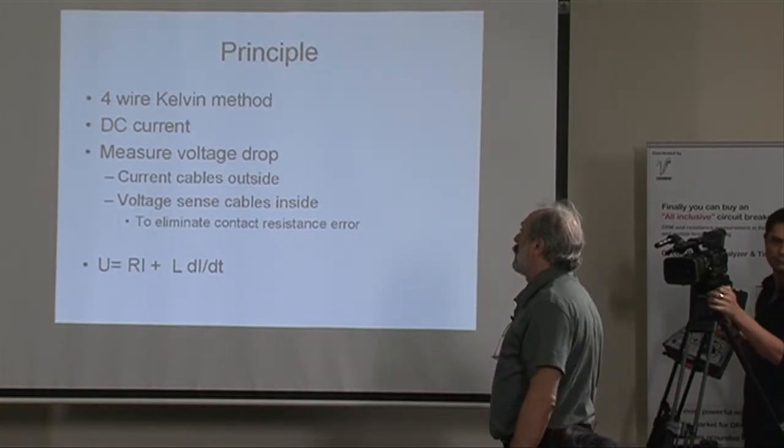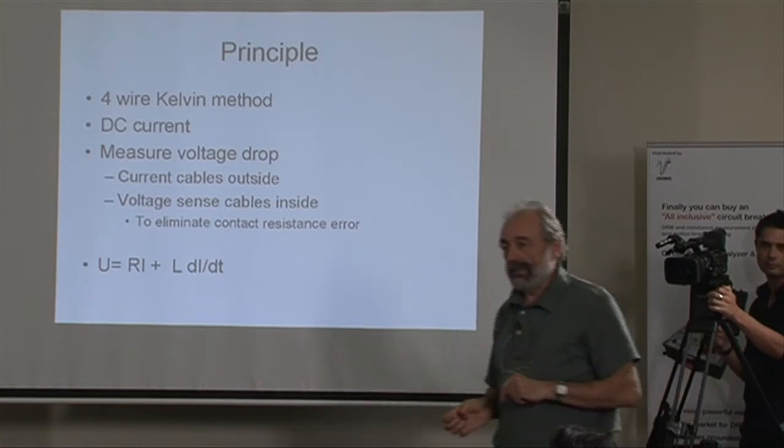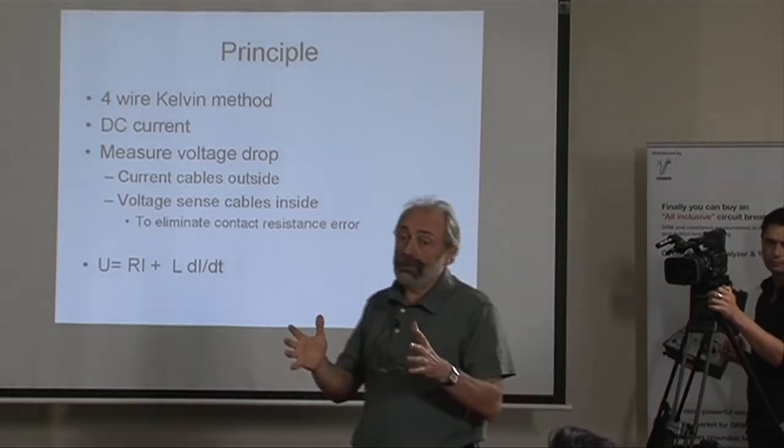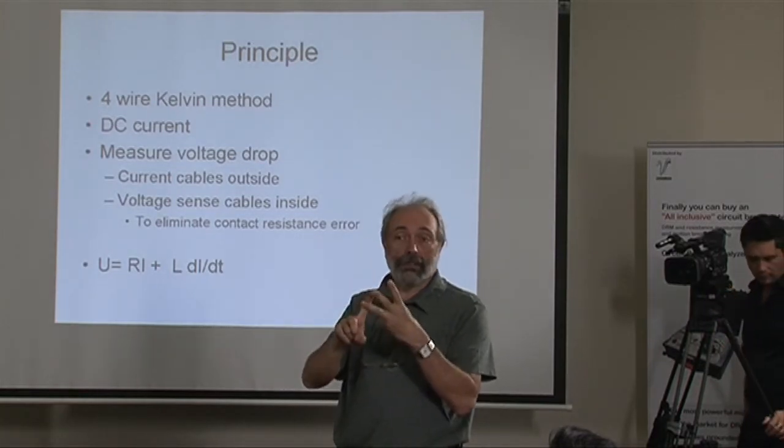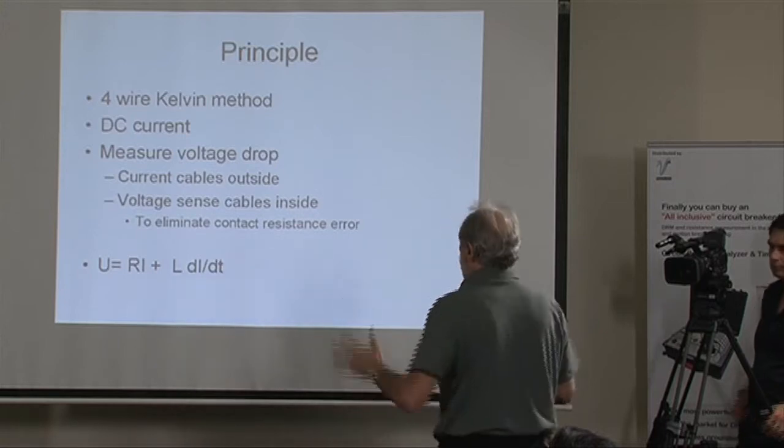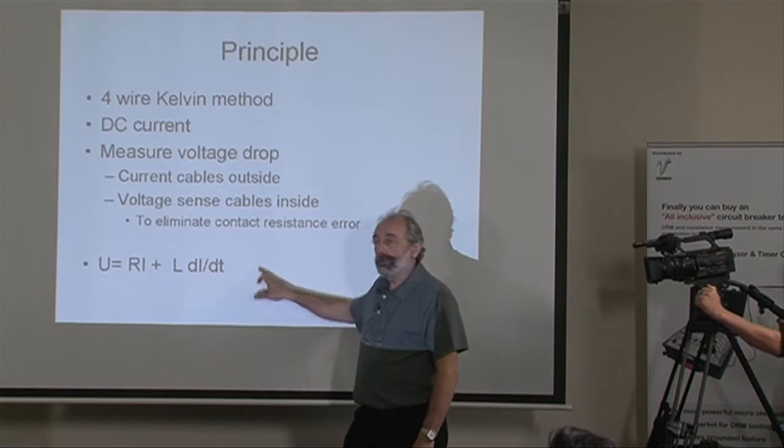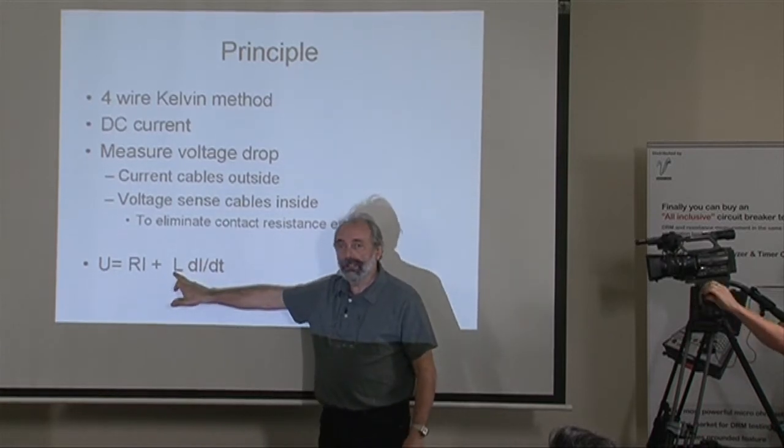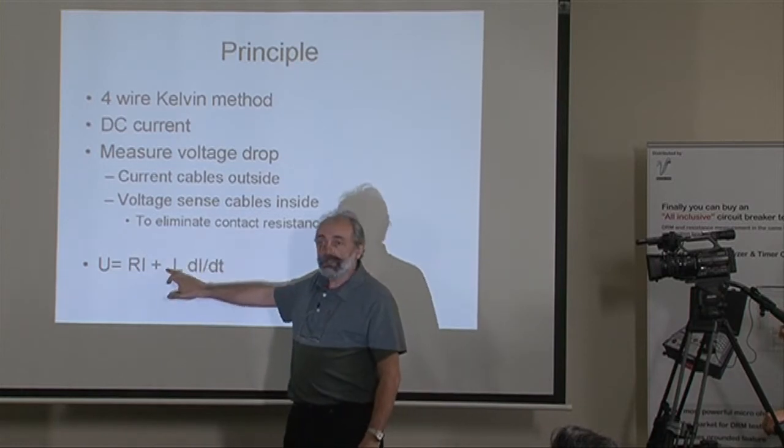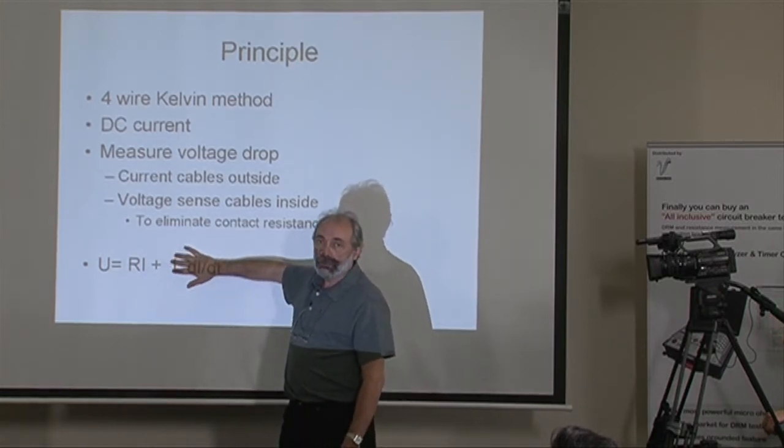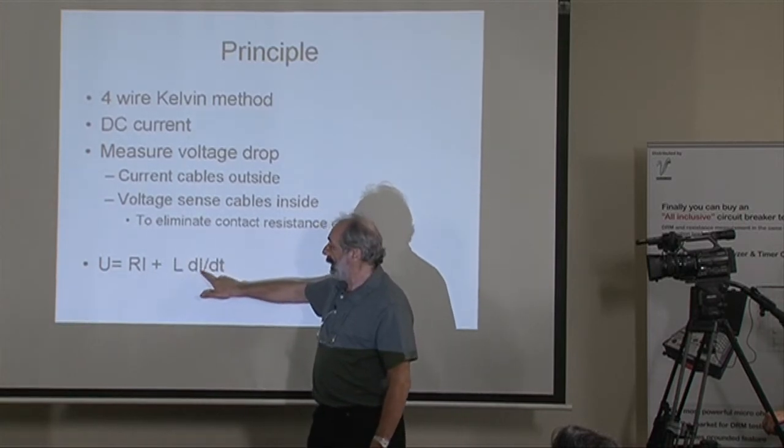Always current cables outside, voltage cables inside. And now what you do is you know the current, you measure the voltage, you calculate the resistance. Right? Wrong. As long as we deal with the transformer that has inductance, we have a component that introduces an error in our measurement and we need to deal with this. This is di dt, or change of current in time.